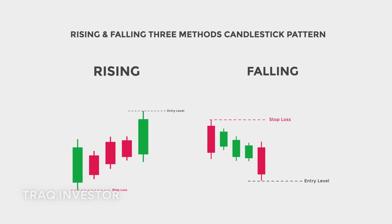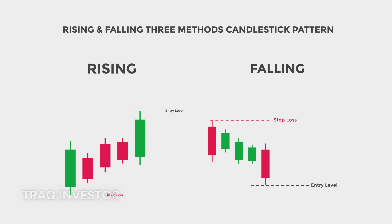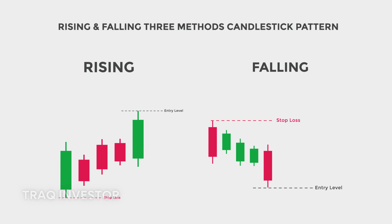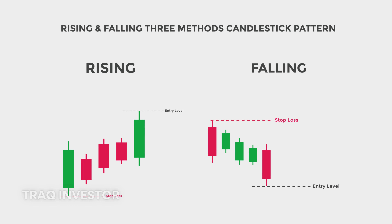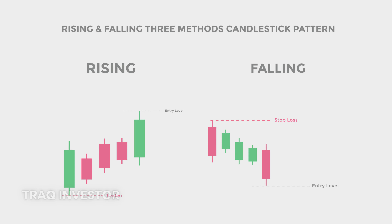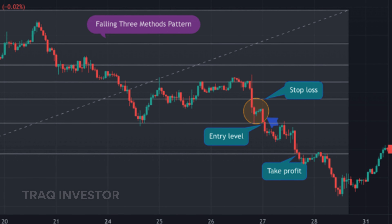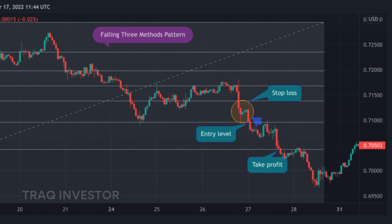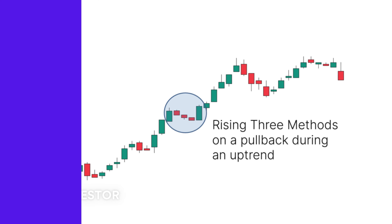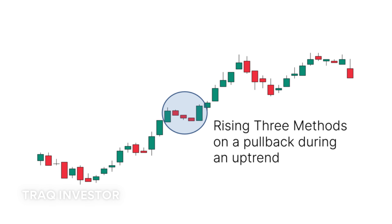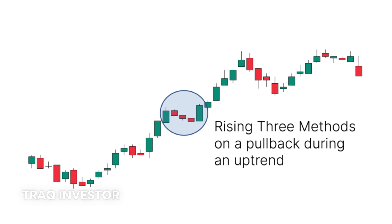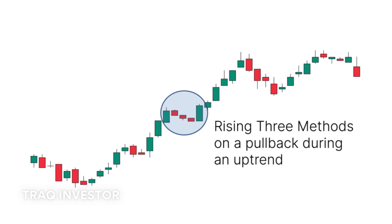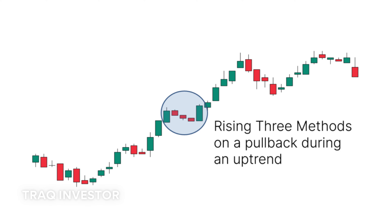Let's explore the falling three methods and rising three methods for predicting trend continuation. The falling three methods bearish pattern consists of a long red body followed by three small green bodies, all within the range of the bearish bodies — indicating that bulls lack the strength to reverse the trend. Conversely, the rising three methods bullish pattern comprises three short red candles within the range of two long ones, showing that despite selling pressure, buyers retain control.